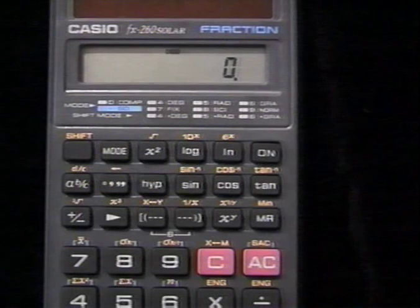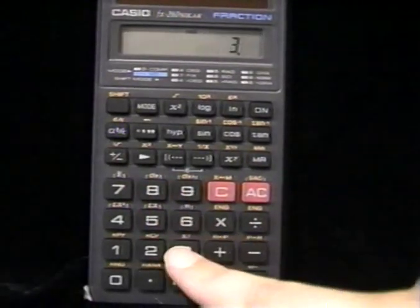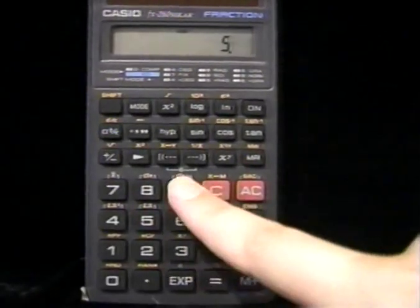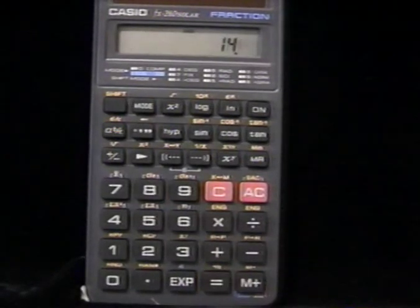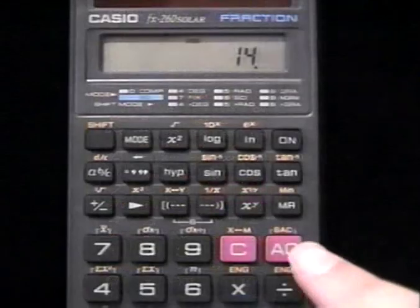The red C or clear key will only clear the last number entered immediately before pressing the C key. To do any arithmetic with this calculator, simply enter the problem as it is written in your test booklet. For example, in the problem 8 minus 3 plus 9, you'd enter 8 minus 3 plus 9, and finally equals. Your answer should be 14.